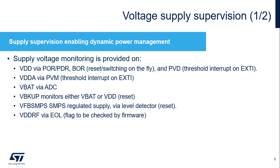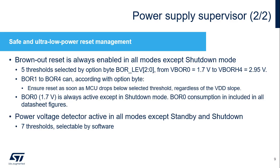On the sub-gigahertz radio VDDRF supply, a sub-gigahertz radio end-of-life detector is available. The sub-gigahertz radio supply detector can be enabled to be operational when the sub-gigahertz radio is active. The power supply supervisor guarantees a safe and ultra-low power reset management. STM32WL5 devices embed an ultra-low power brownout reset, or BOR, which is always enabled in all power modes except shutdown mode. The BOR ensures reset generation as soon as VDD drops below the selected threshold, regardless of the VDD slope. Five thresholds from 1.7 to 2.95 volts are selected by option byte, programmed in flash memory.